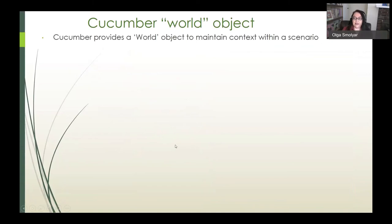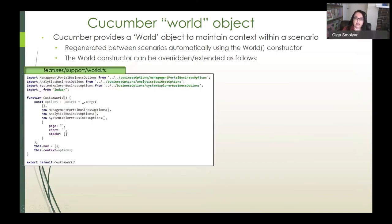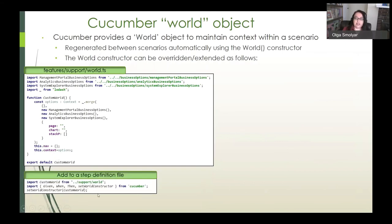Next, business option files are used to construct the cucumber world object whereby their constructor initializes the business options with defaults where applicable and these can get populated or overridden within step definitions by data passed in by the feature files. The classes get instantiated and merged into cucumber world object's context property during world construction for each scenario.